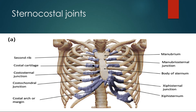Next are the sternocostal joints. The first costal cartilage articulates with the manubrium, and this is a cartilaginous joint that offers no movement. From rib 2 to rib 7, the costal cartilage articulates with the body of the sternum by synovial joints.